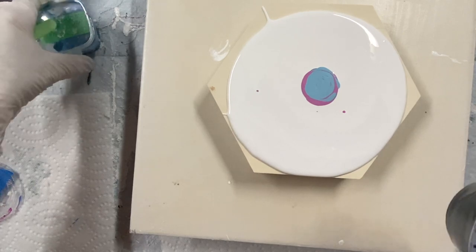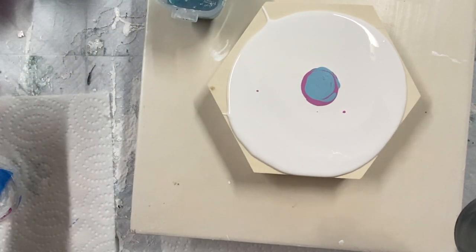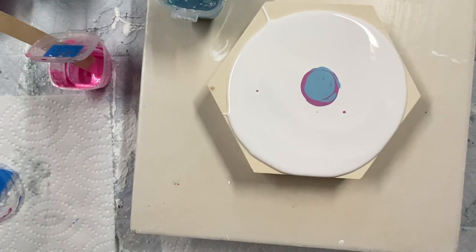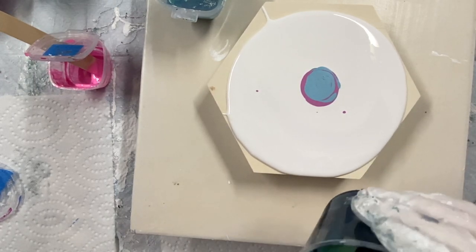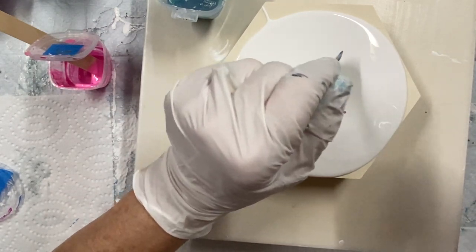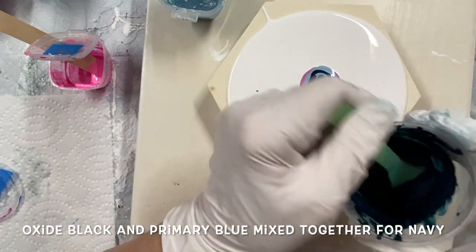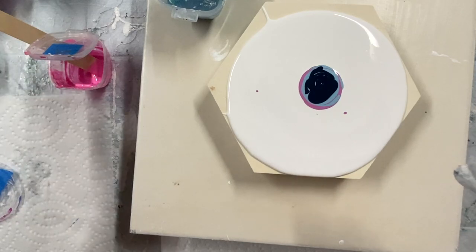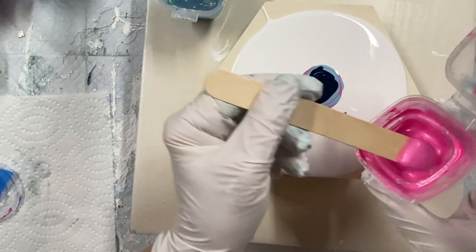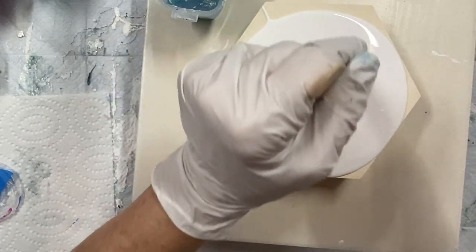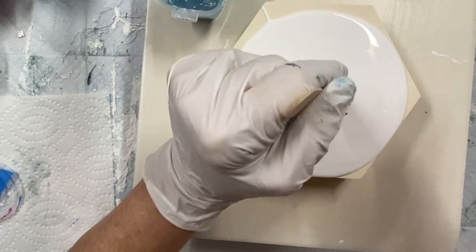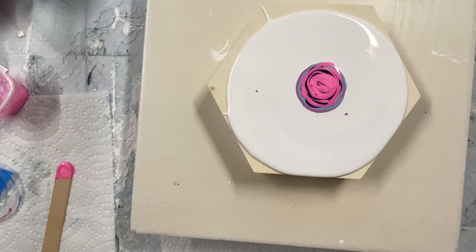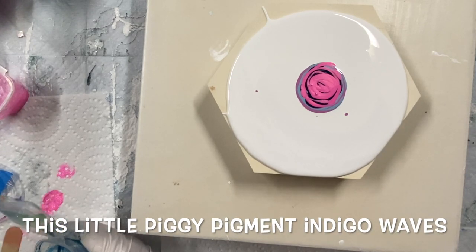And then I have this blue indigo waves by This Little Piggy and pink fairy floss. I think I'll put the fairy floss next. I like this color. It's pretty, very bright pink. And then the indigo waves. I like this one too. I used it a lot lately.